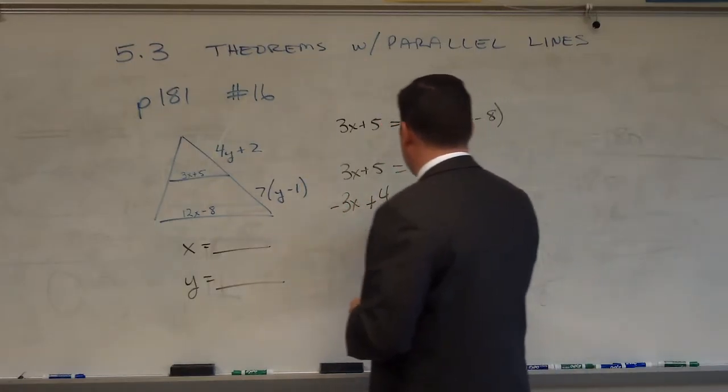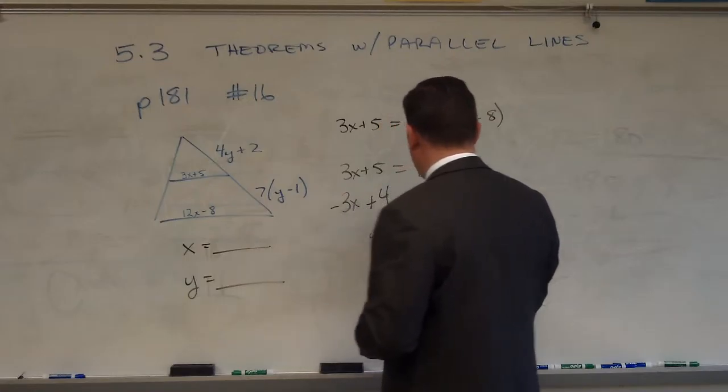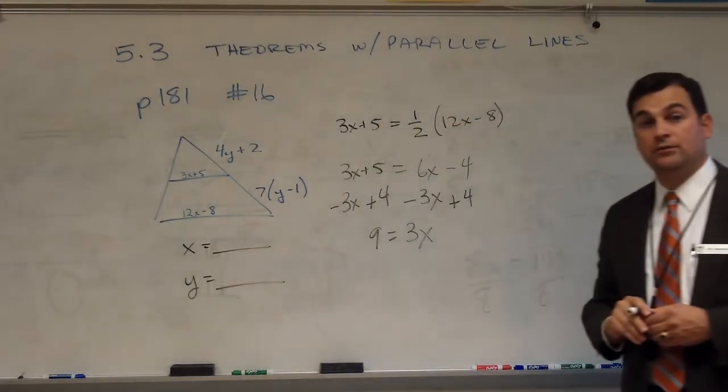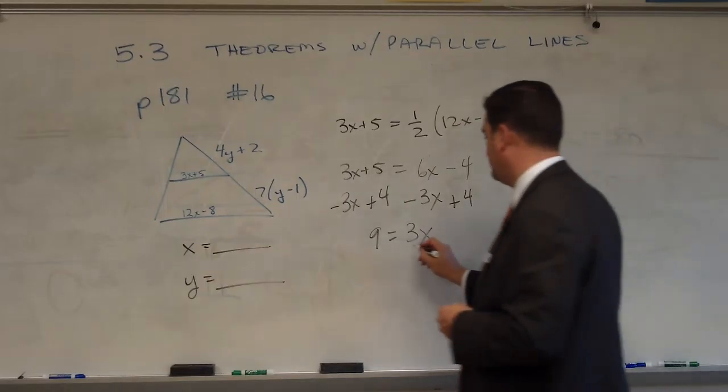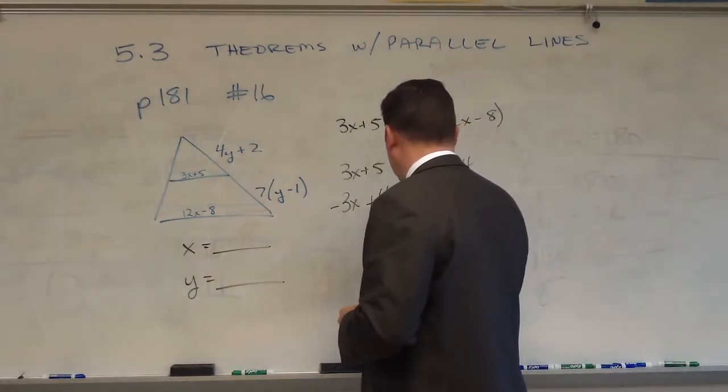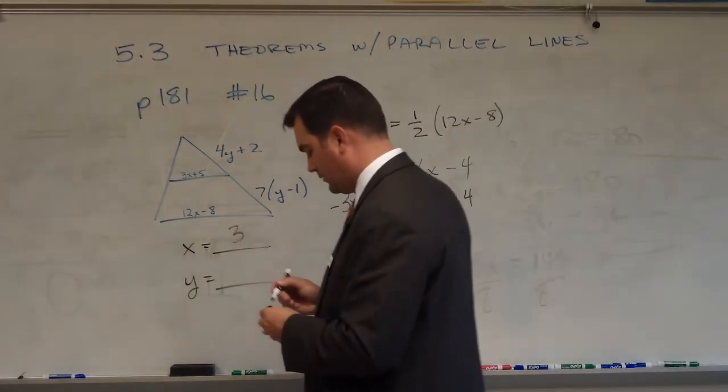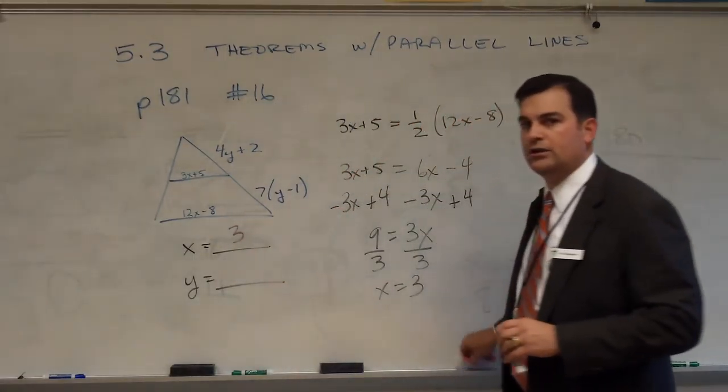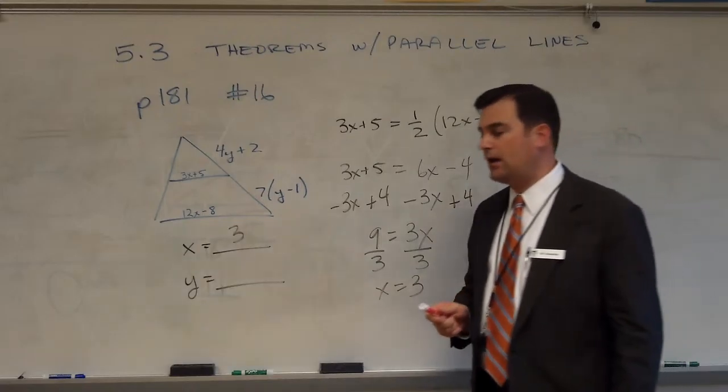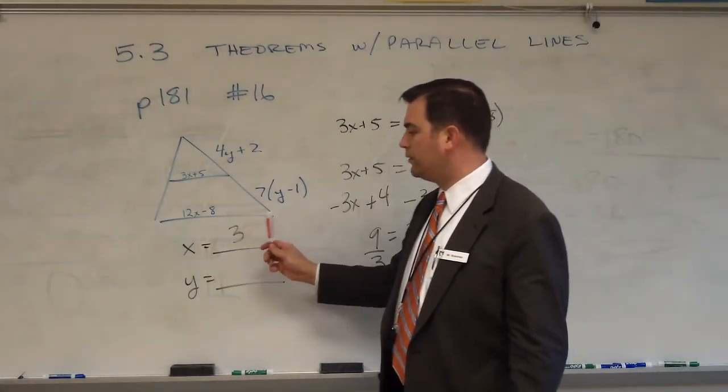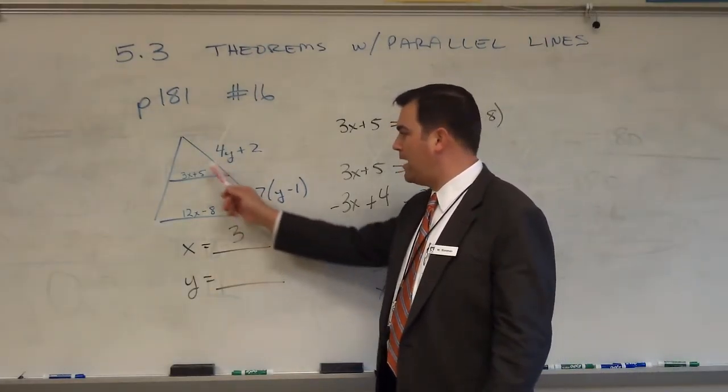3x plus 5 equals 6x minus 4. Now I'm going to add 4 to both sides and subtract 3x from both sides, and I get 9 equals 3x. At this point, I'm going to divide both sides by 3, and I solve that x equals 3.